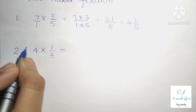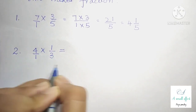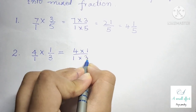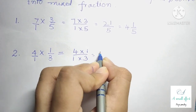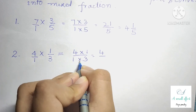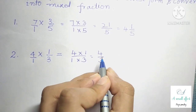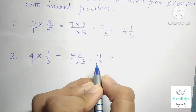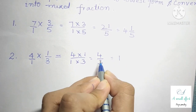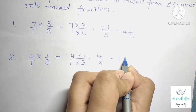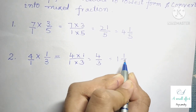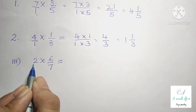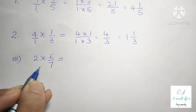So 4 into 1 is 4 by 1 into 3 is 3. We can't reduce it to lowest form, so 3 ones are 3, 4 minus 3 is 1, giving 1 by 3. So our answer is 1 whole 1 by 3. Question number 3 part 3 is 2 into 6 by 7. We can write 2 as 2 by 1.